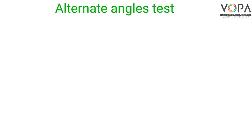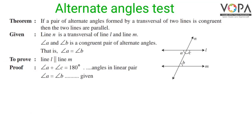Alternate angles test: if a pair of alternate angles formed by a transversal of two lines is congruent, then the two lines are parallel. We are given that line N is a transversal of line L and line M, and angle A and angle B are a congruent pair of alternate angles, that is angle A is equal to angle B.